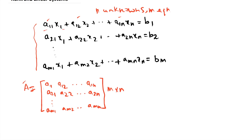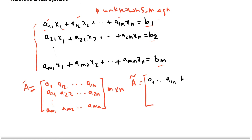We also have something called the augmented matrix Ã. The augmented matrix is the coefficient matrix with a column vector of all the bᵢ terms appended at the end. So Ã has rows [a₁₁, ..., a₁ₙ, b₁], [a₂₁, ..., a₂ₙ, b₂], through [aₘ₁, ..., aₘₙ, bₘ]. We have to be very cautious with all the indices as this can get extremely confusing.